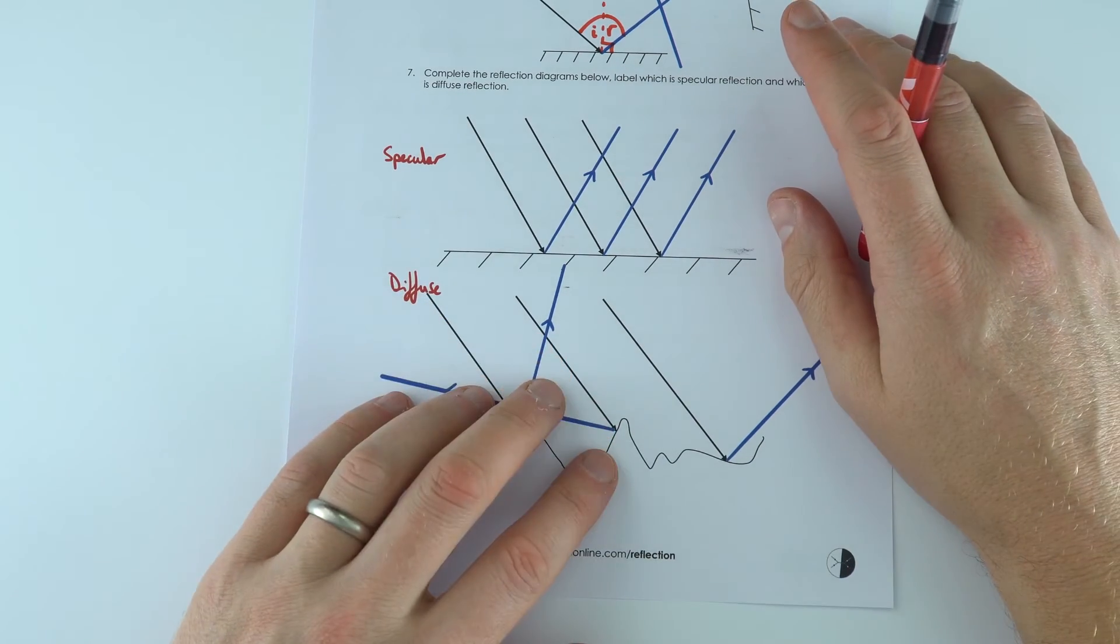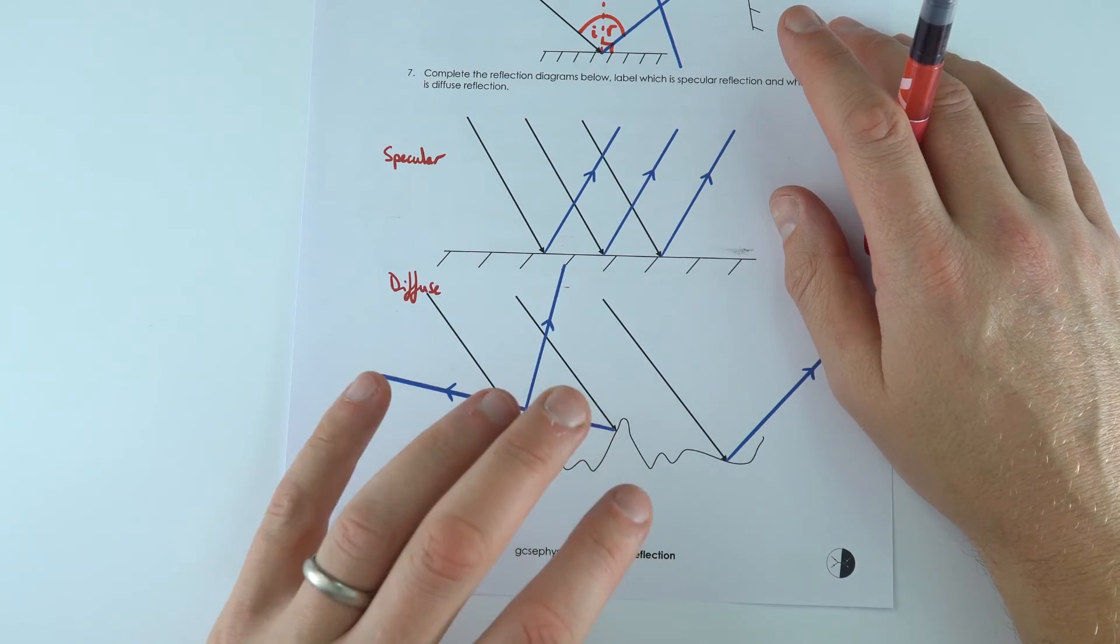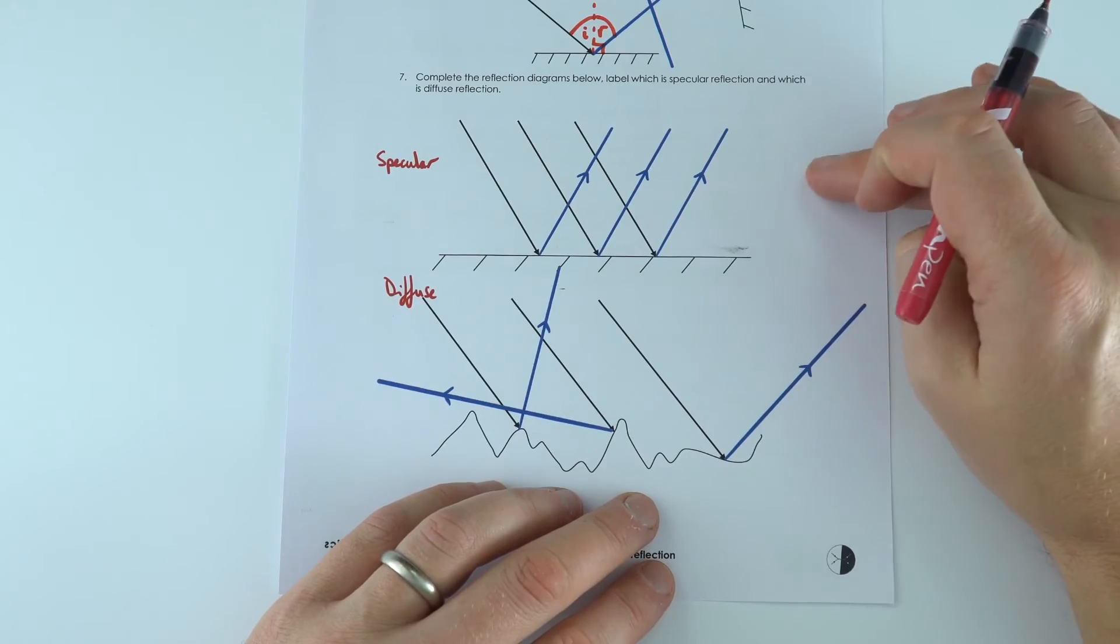So this is what's happening at the surface when you have a diffuse reflection, often from a surface which is quite rough, even if it's something like a piece of paper, for example.